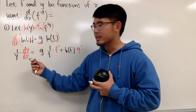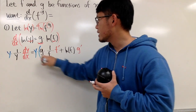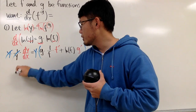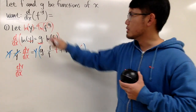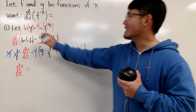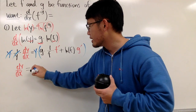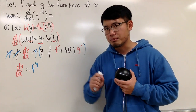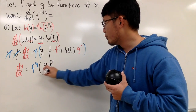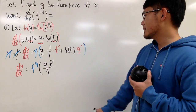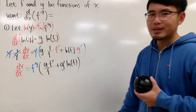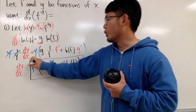To isolate dy/dx, we multiply both sides by y — remember it's the entire right-hand side — and the y and 1 over y cancel. Now dy/dx is the derivative we want. Since y is exactly f to the g's power, we put that down: f to the g's power, times the quantity g times f prime over f, plus g prime times ln(f). And that's the formula when you have a function to a function power.